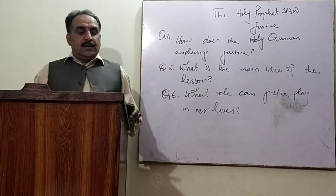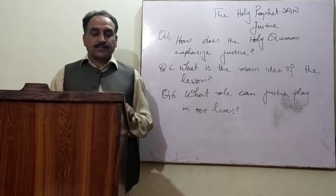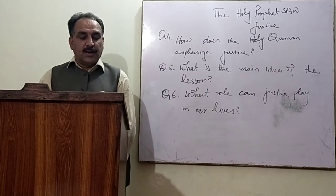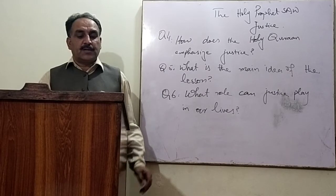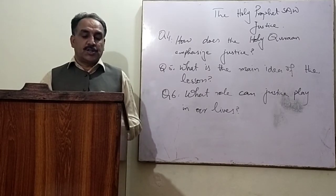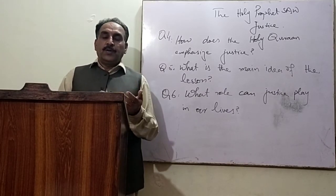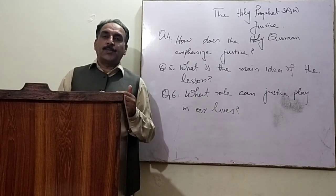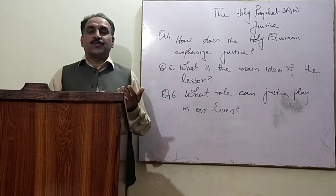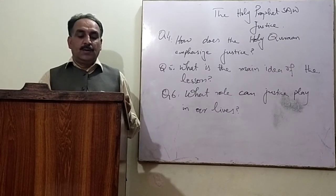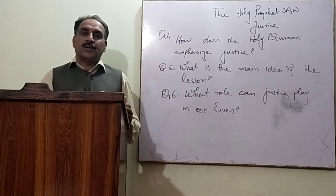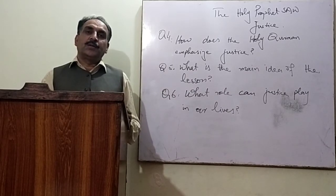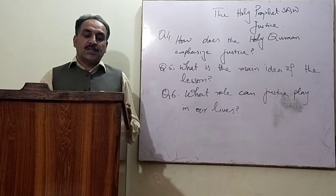Then come to vocabulary on page 7. Find the meaning of the following words from the dictionary and identify the part of speech of the word through abbreviation. Now you open your dictionary. Opposed — it is a verb. Oppression — oppression is a noun. Approval — approval is a noun. Decision is a noun.